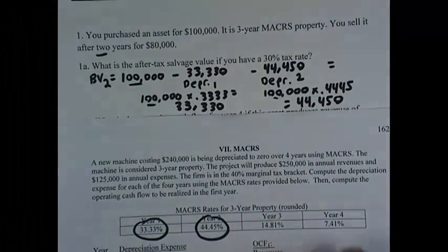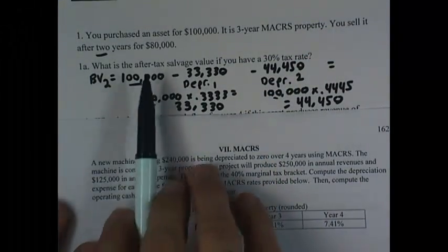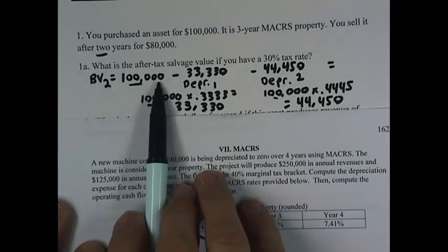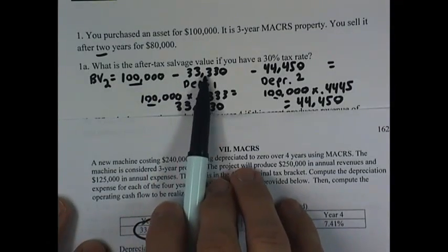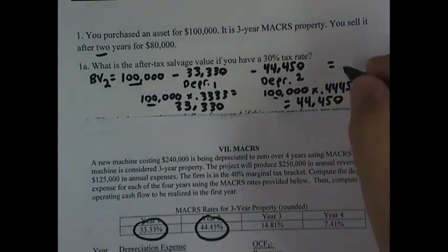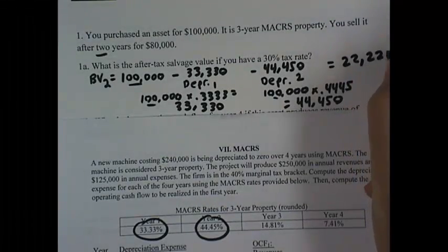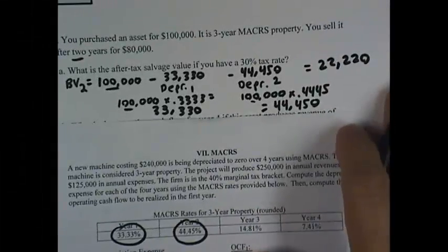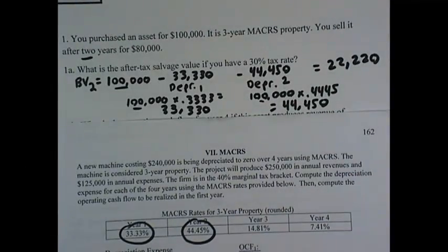So our book value at the end of year two when we plan to sell the asset is $100,000 minus $33,330 minus $44,450. That is $22,220 for our book value at the end of year two.